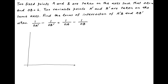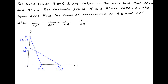Let's start by plotting this information on the Cartesian plane. The coordinates of point A and B are respectively A,0 and 0,B. Let's assume that the coordinates of point A' are λ,0 and the coordinates of point B' are 0,μ. Now join point A' to B and point A' to B'. Let the point of intersection of these two lines be P with coordinates H,K.